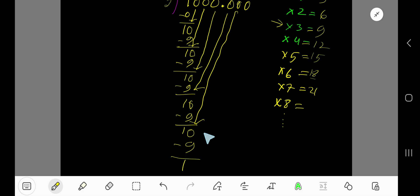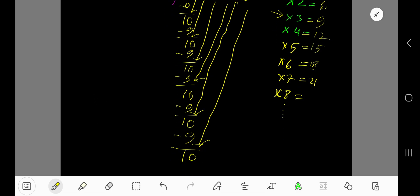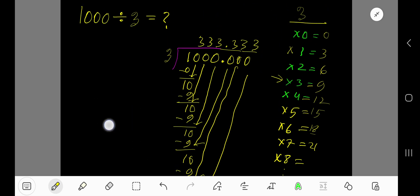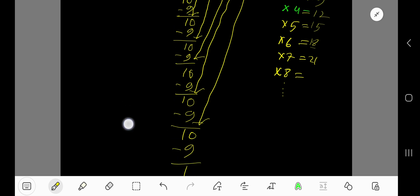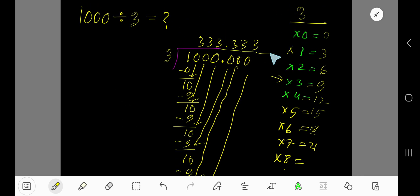Bring down the next 0, so again you're getting 10. 3 goes into 10 how many times? 3. 3 times 3 is 9. Subtract, getting 1. Actually, this process is continuing, so you can place here 3 dot.